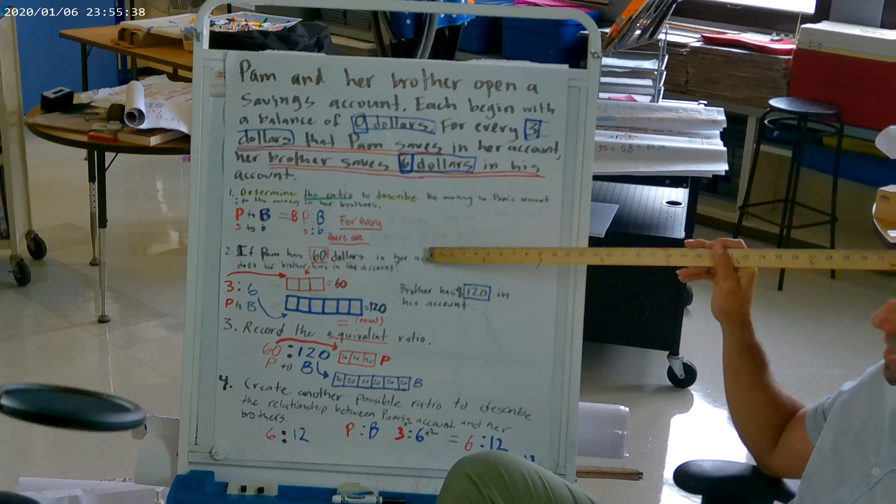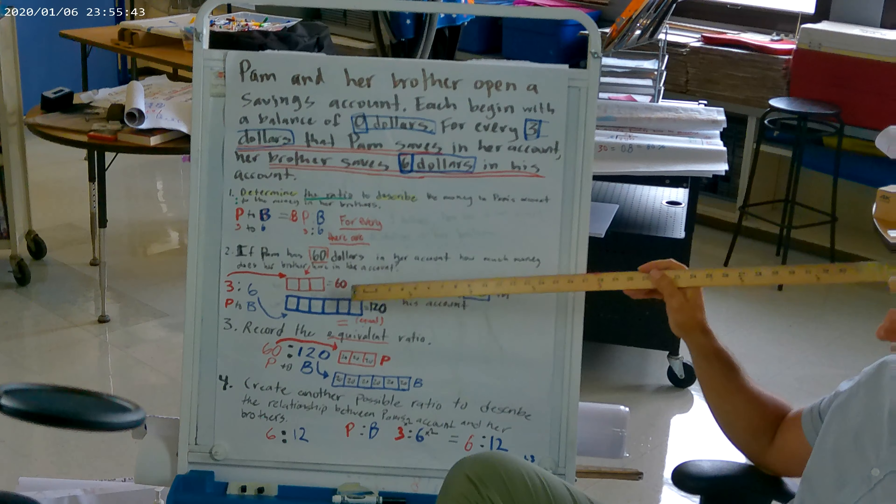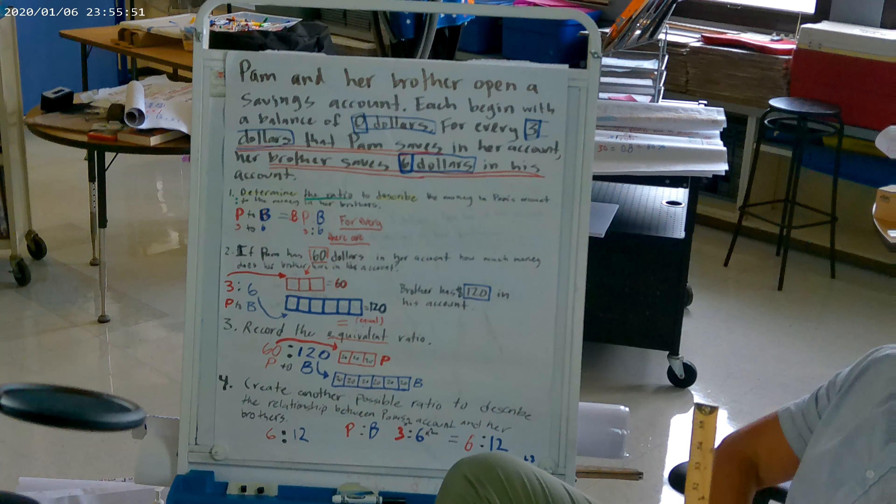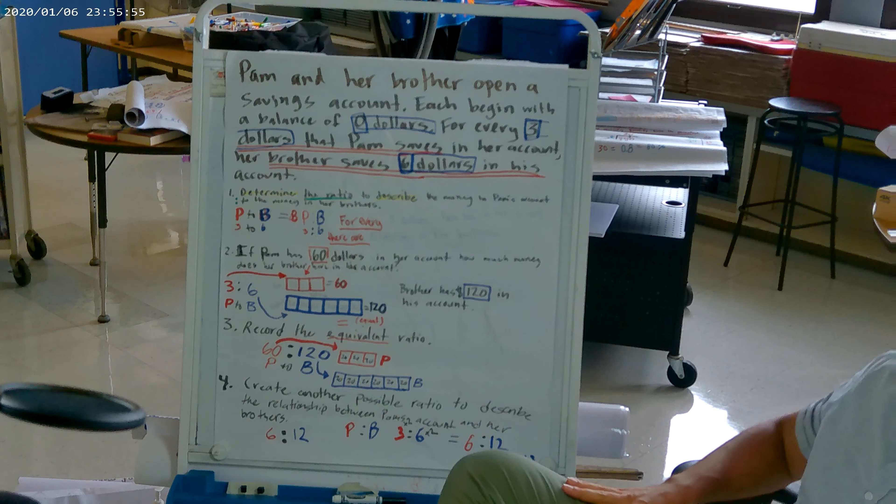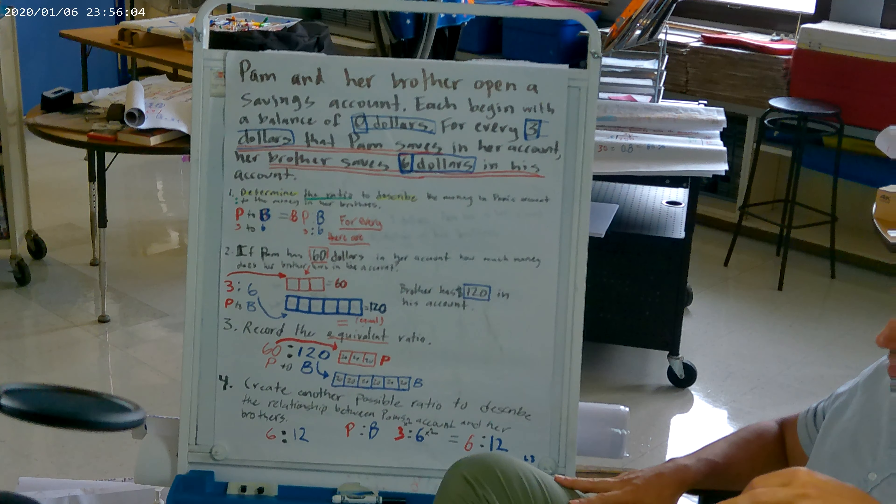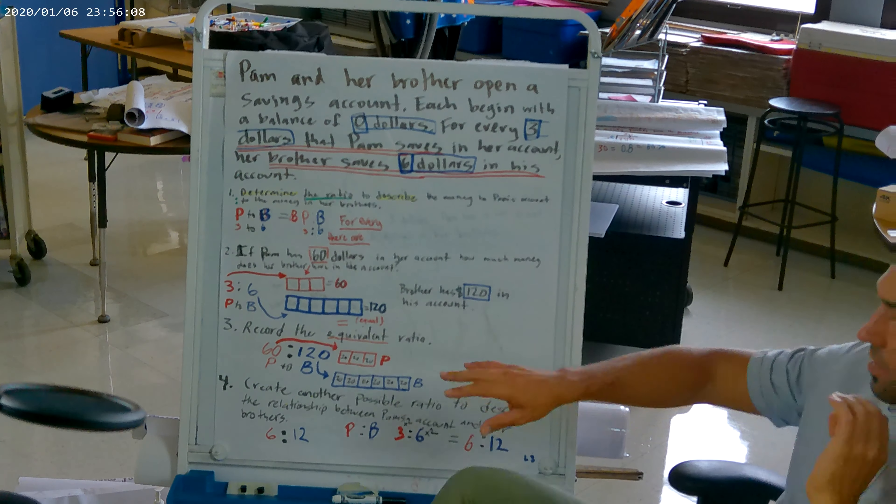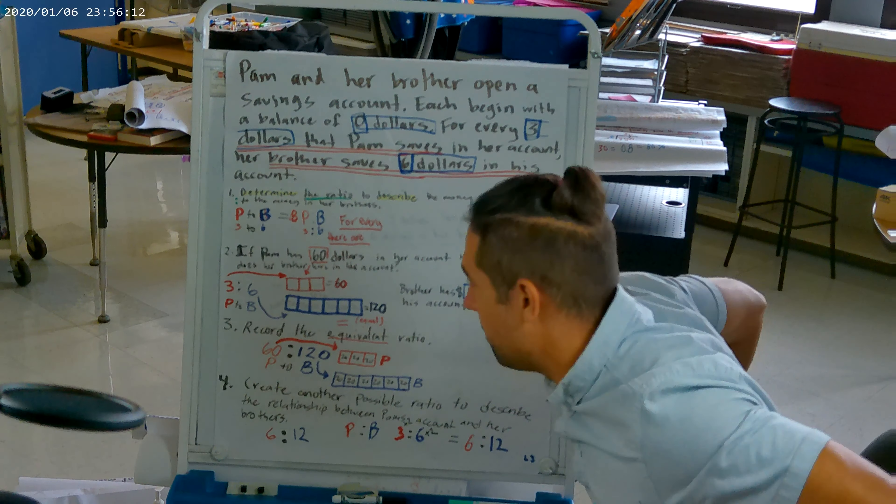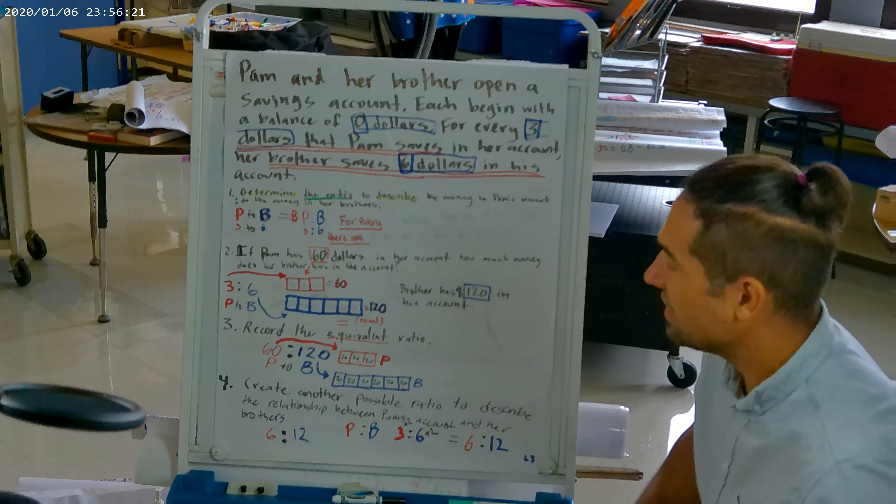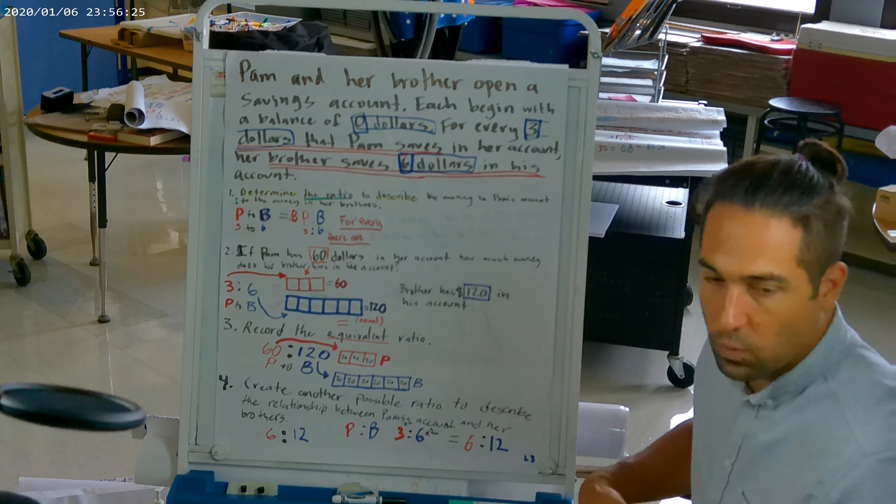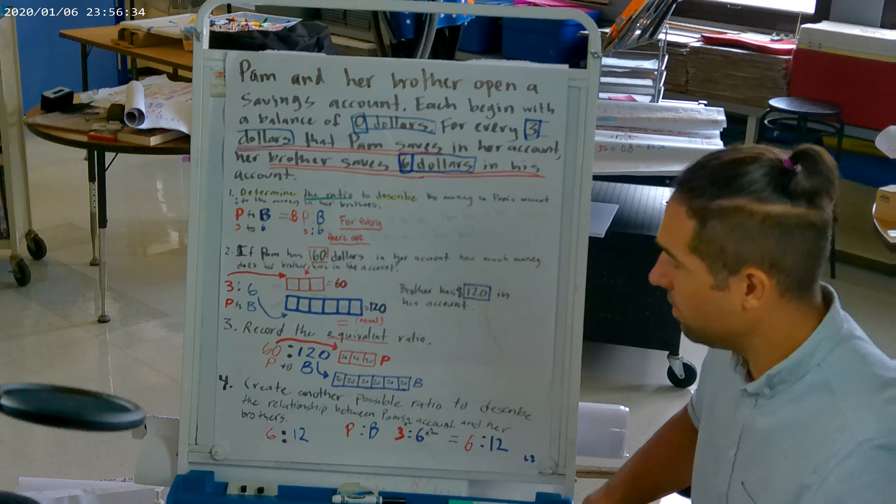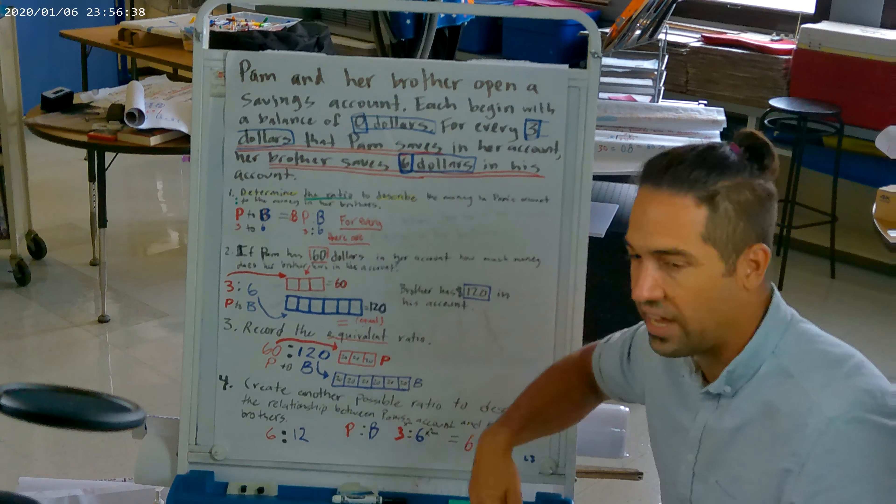If Pam has $60 in her account, how much money does her brother have in his account? So this is where we start to get into this idea of equivalent ratios and ratio tables. And I want to let you know that there's all kinds of different ways to do this. One of the ways that Eureka math really wants you to know is that you can do tape diagrams to do this kind of stuff. So what we did here is we looked and we said, I know the ratio is 3 to 6. So what I'm going to do is I'm going to draw out three squares to represent Pam's $3.